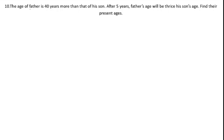Problem 10: The age of a father is 40 years more than that of his son's age. We don't know the son's age. After five years, the father's age will be thrice — that means three times — his son's age. We need to find their present ages.